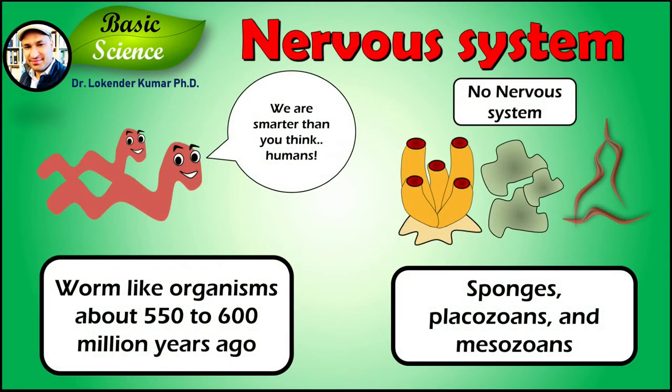Nervous tissue first arose in worm-like organisms about 550 to 600 million years ago. Nervous systems are found in most multicellular animals but vary greatly in complexity. The only multicellular animals that have no nervous system at all are sponges, placozoans, and mesozoans, which have very simple body plans.